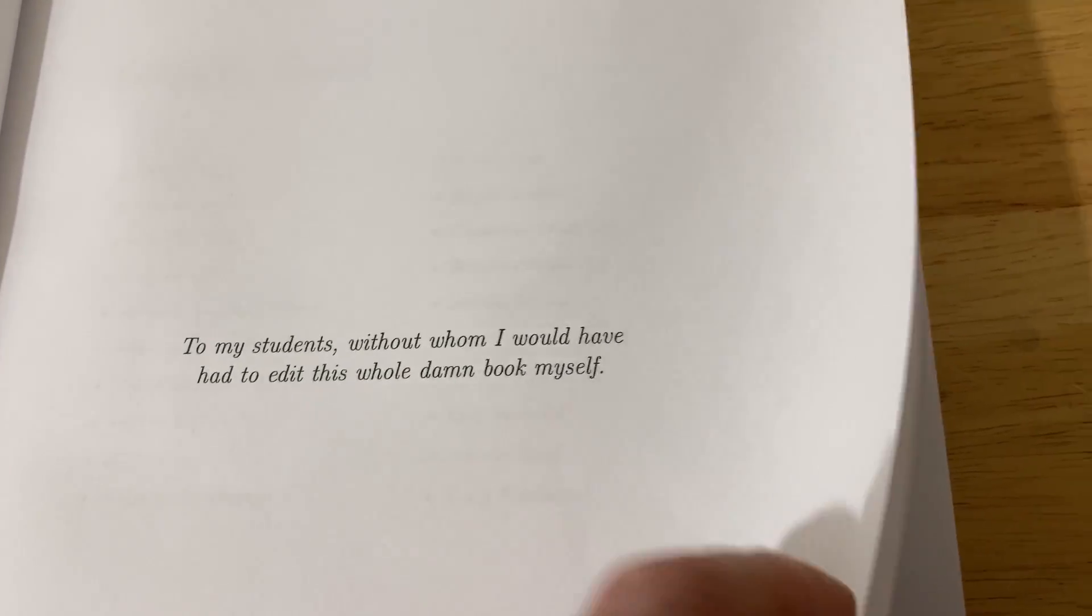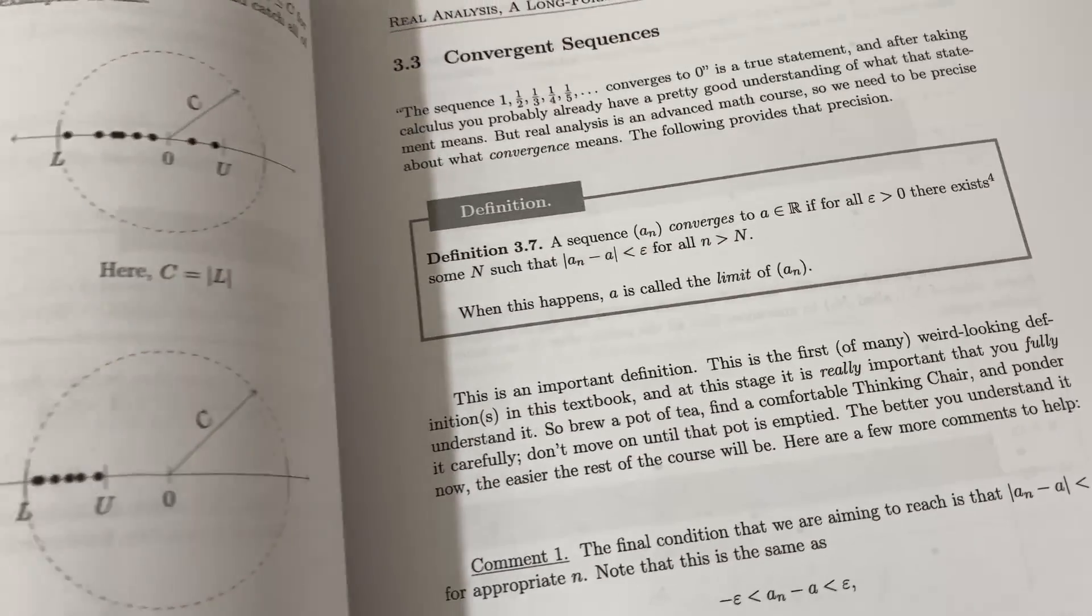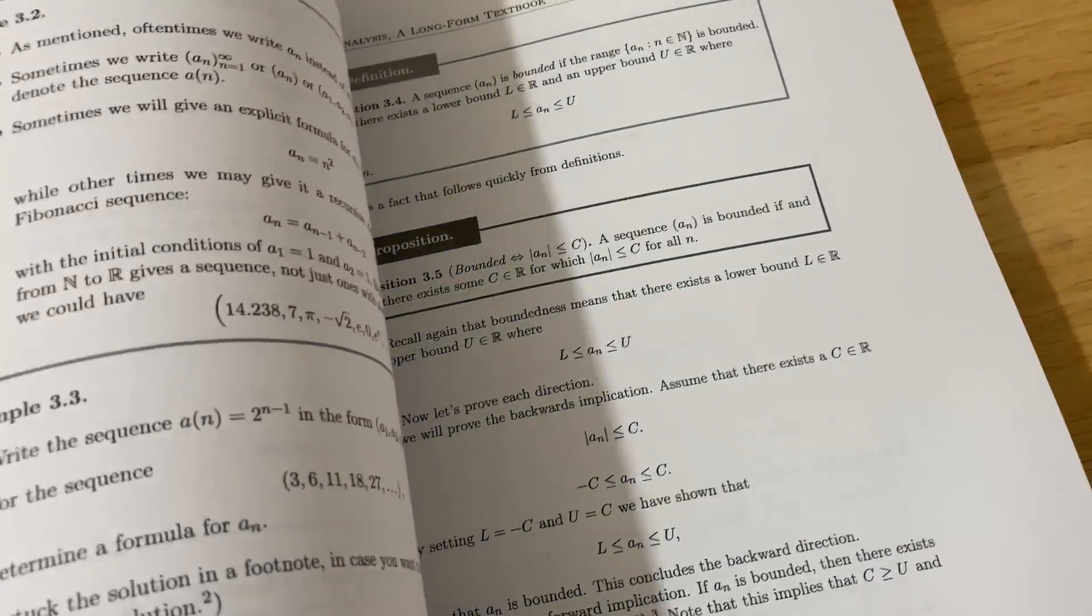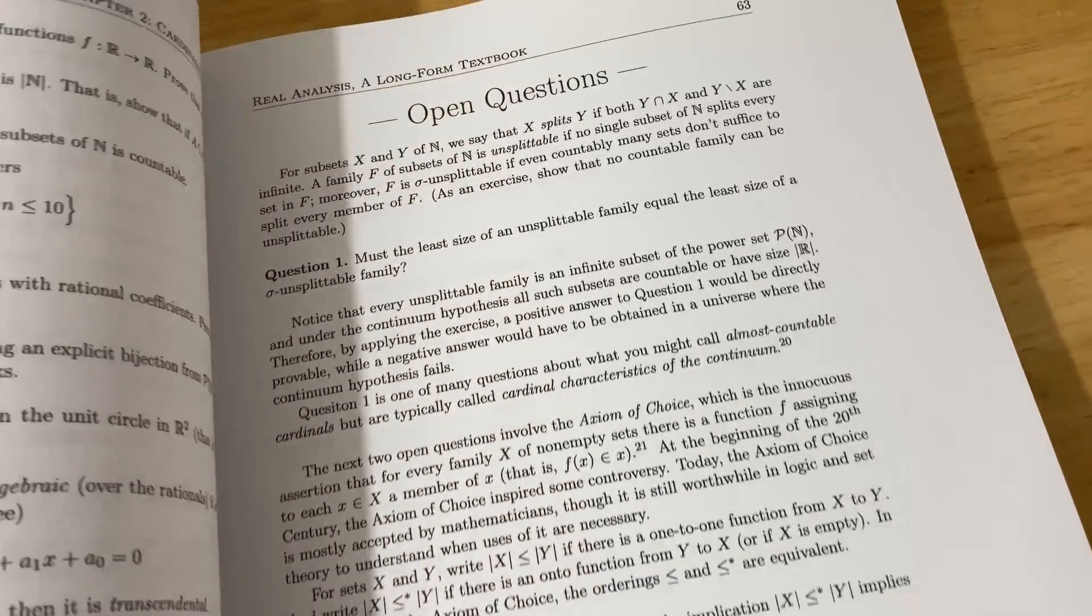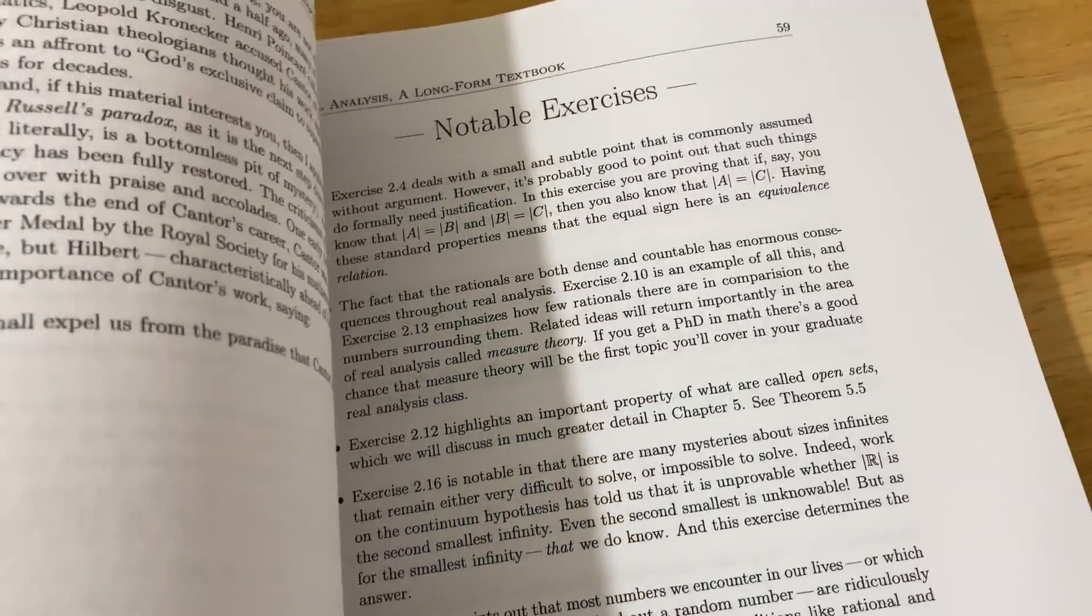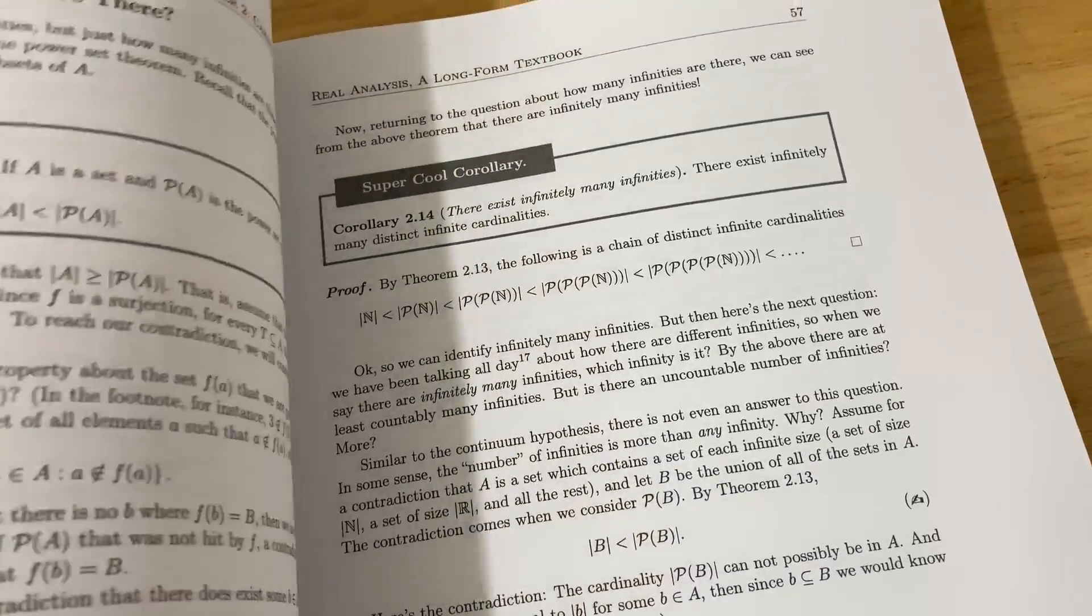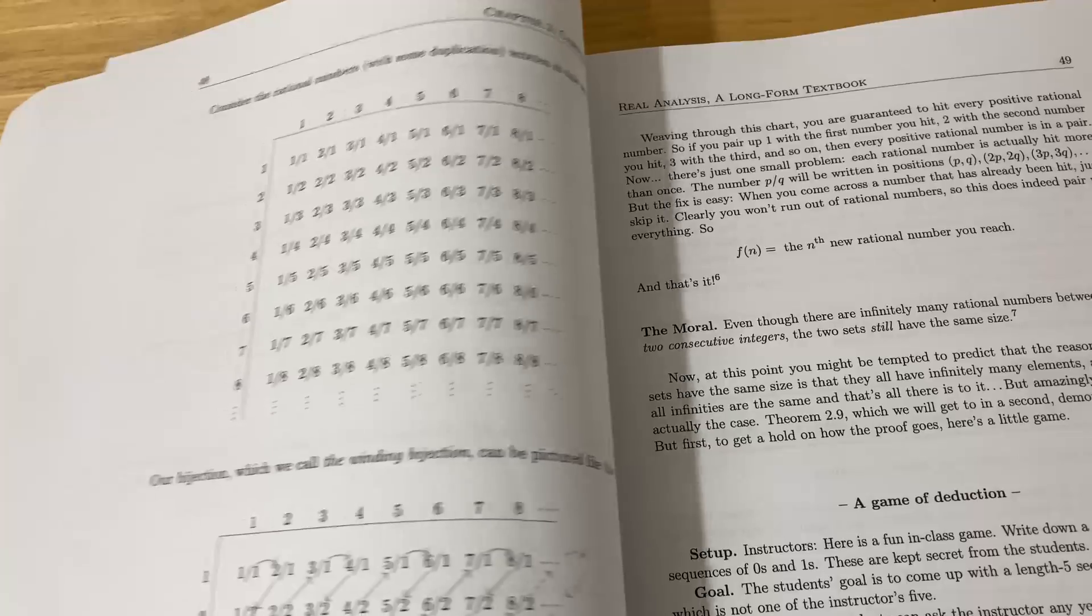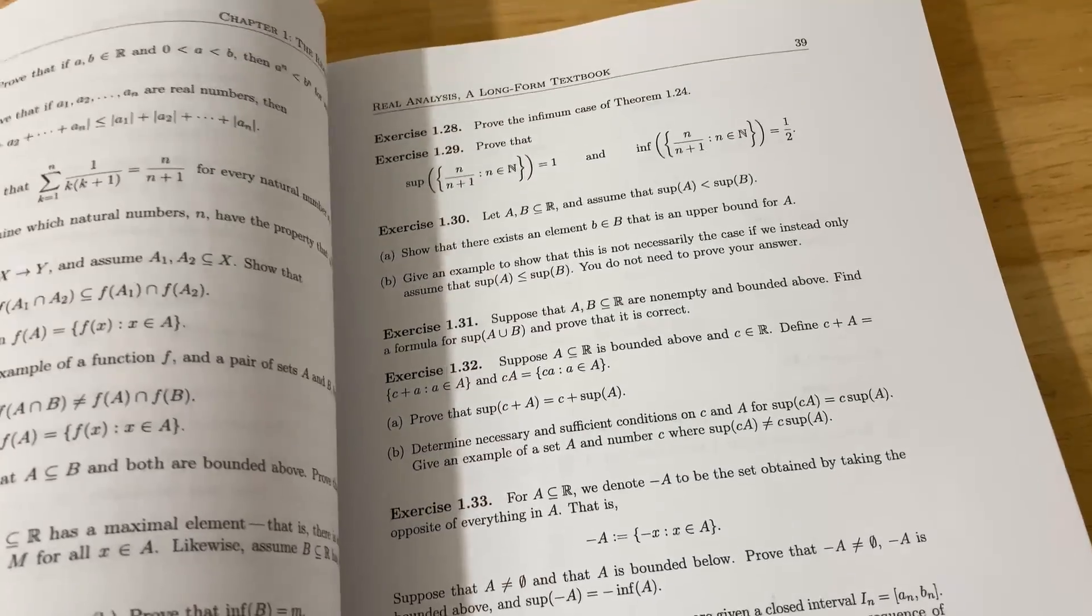So one of the things about writing books is it takes a ton of work and time and you need someone else to help you because it's so easy to make mistakes, especially when it comes to typesetting mathematics. If I typeset just a few pages and I don't triple check it, chances are there's going to be a small error. So I can't imagine how long and how much work it took Jay to write this book.